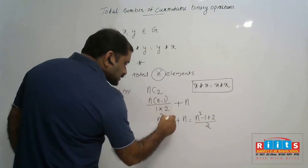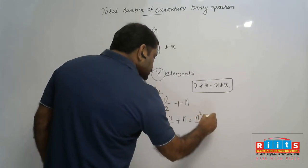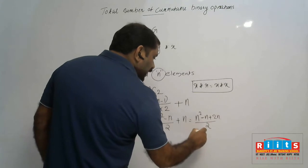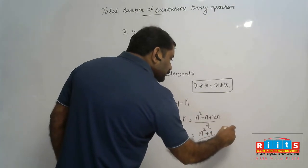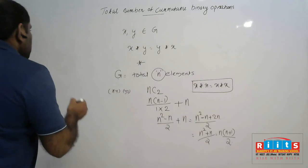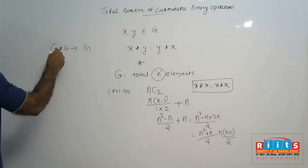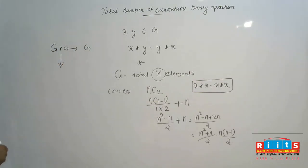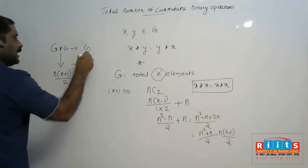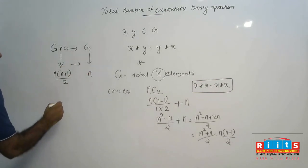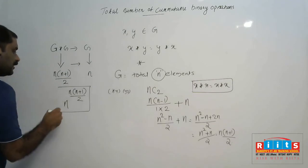Simplifying: n(n+1)/2. The definition of binary operation is G★G mapping to G itself. Since ★ is commutative, G★G contains n(n+1)/2 elements total, and G contains n elements. So the total number of mappings is n raised to n(n+1)/2.